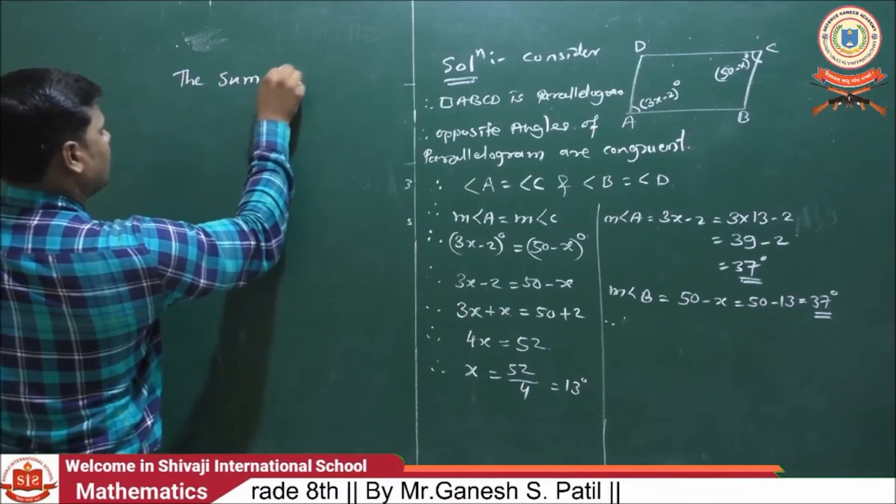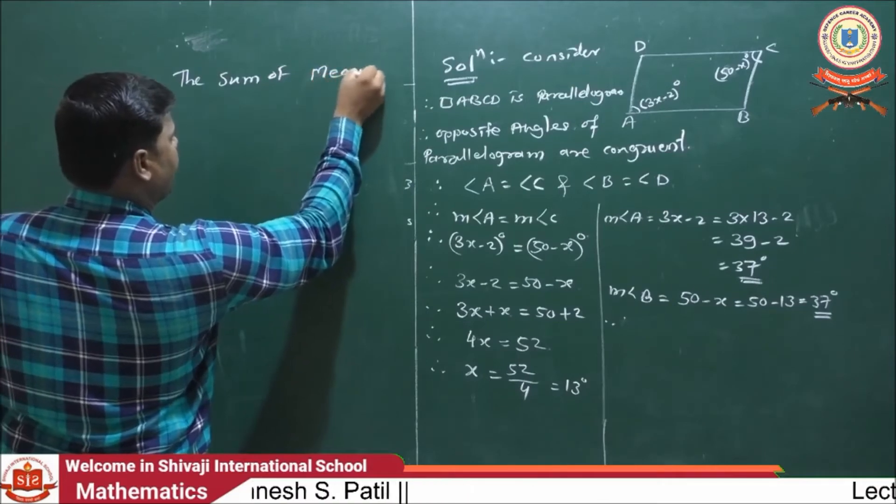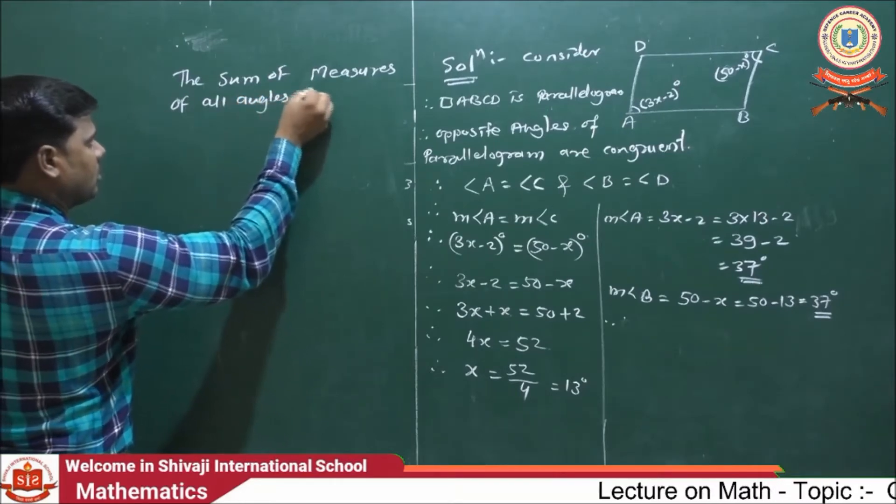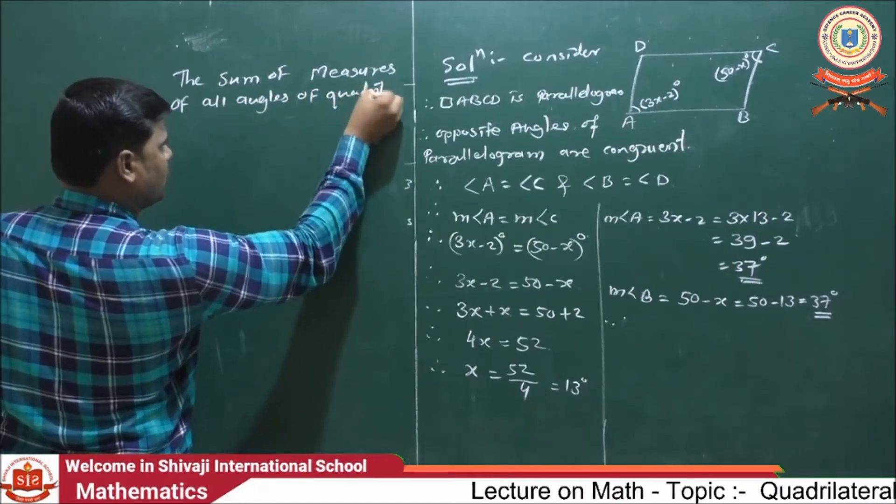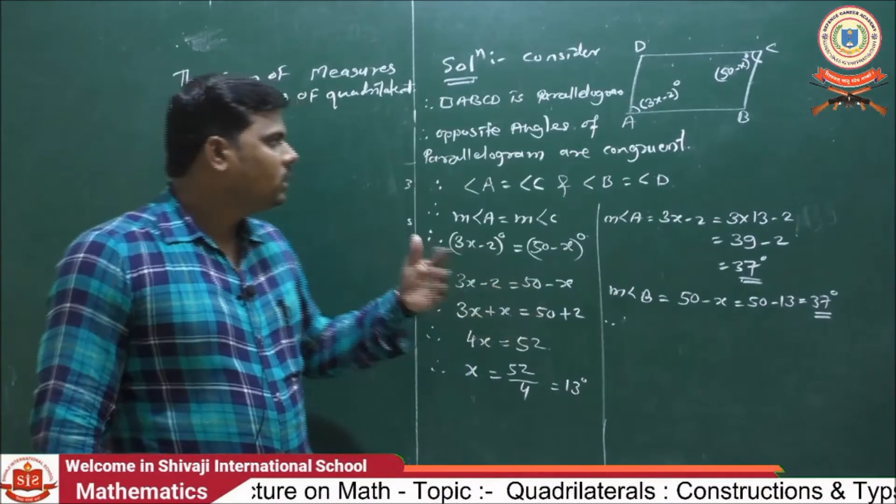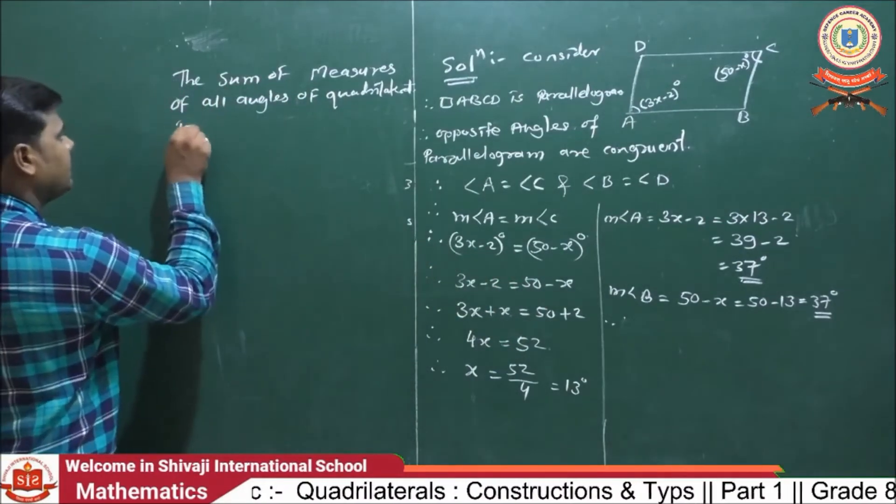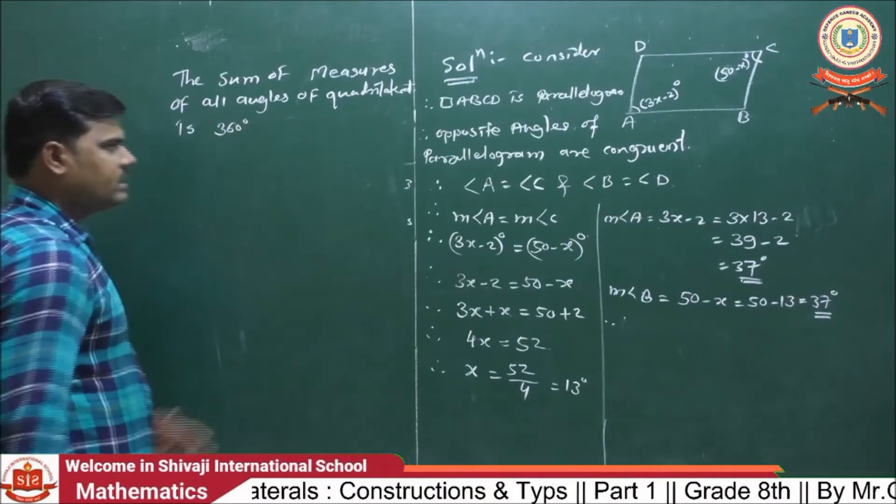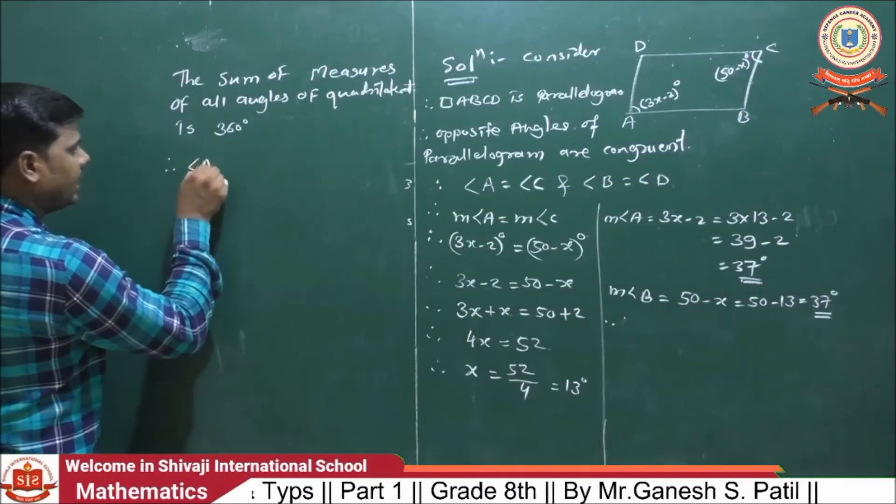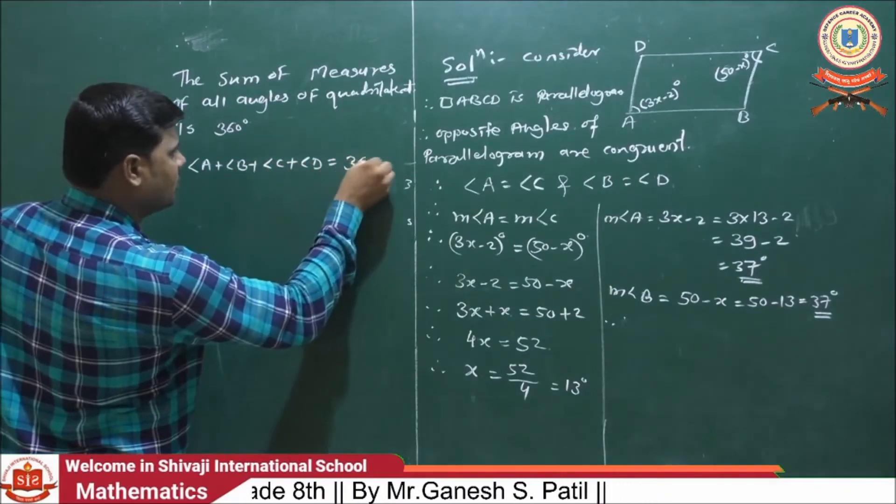The sum of measures of all angles of quadrilateral - quadrilateral means whatever the shape: parallelogram, square, rectangle, trapezium, kite, anything - is 360 degrees. Means, in that figure, the sum of all angles is 360 degrees. Then, angle A plus B plus C plus D is equals to 360 degrees.